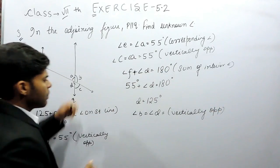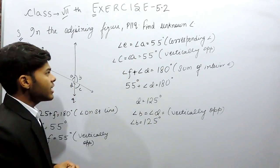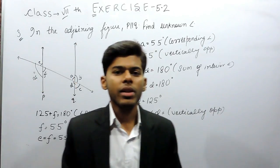So angle B will be again equal to 125 degrees. So there are many ways to solve these lines and angles questions. This is how I can do this.